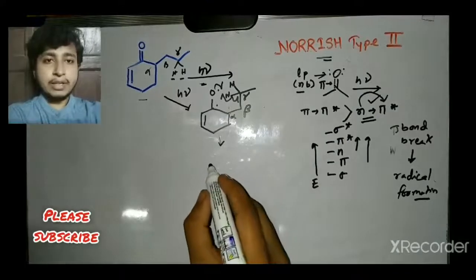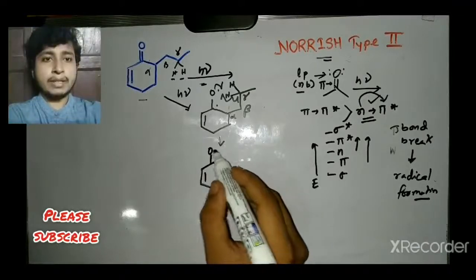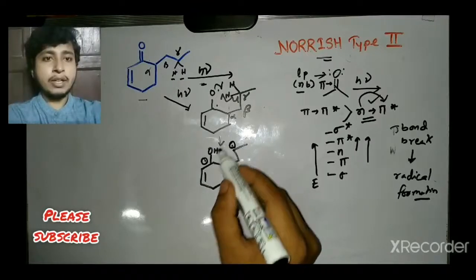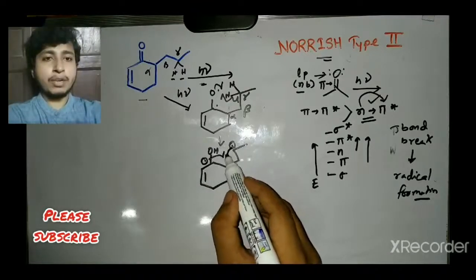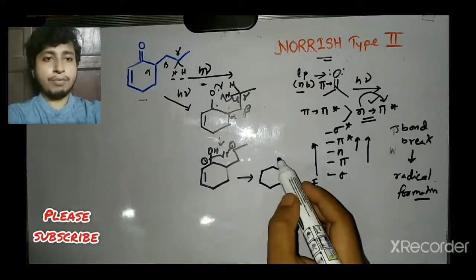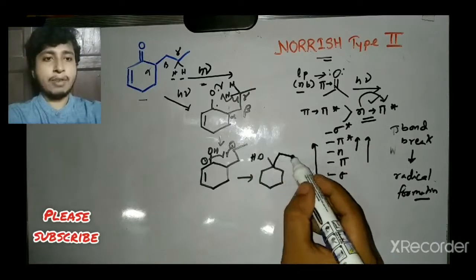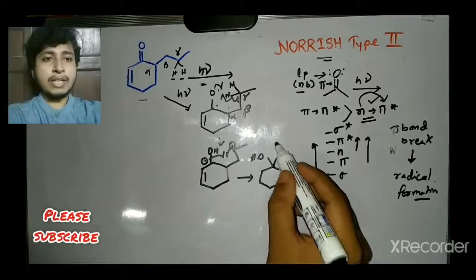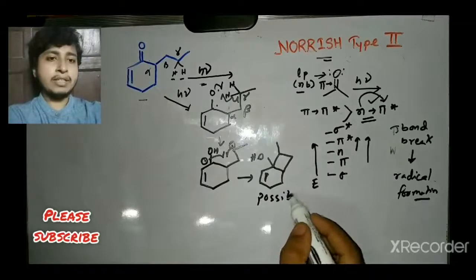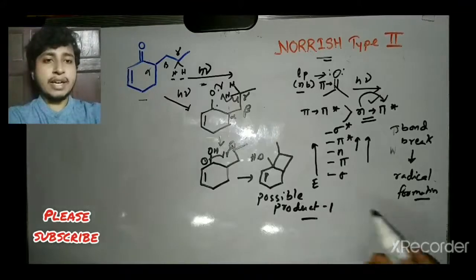In the second intermediate, an O–H group has formed and the radical resides on the gamma carbon. These two radicals — on oxygen and on gamma carbon — are very close to each other and can merge together, leading to the formation of a four-membered ring. This is possible product one.